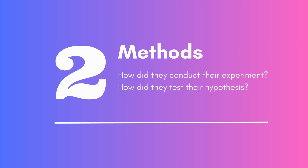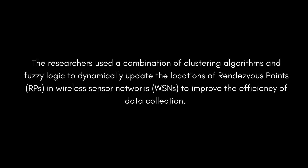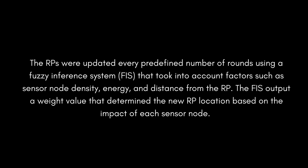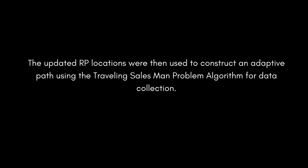The researchers used a combination of clustering algorithms and fuzzy logic to dynamically update the locations of rendezvous points in wireless sensor networks to improve data collection efficiency. Initial RP locations were obtained by clustering sensor nodes using the K-means algorithm. Each RP was assigned a priority value based on the number of associated sensor nodes and their average hop distance from the RP. RPs were updated every predefined number of rounds using a fuzzy inference system accounting for sensor node density, energy, and distance from the RP. The FIS output a weight value determining the new RP location based on each sensor node's impact. Updated RP locations were then used to construct an adaptive path using the traveling salesman problem algorithm for data collection.